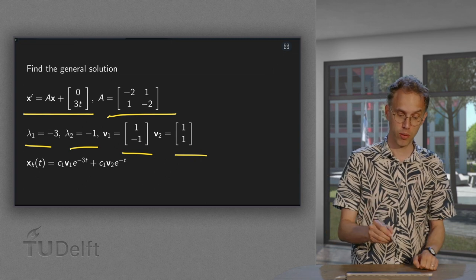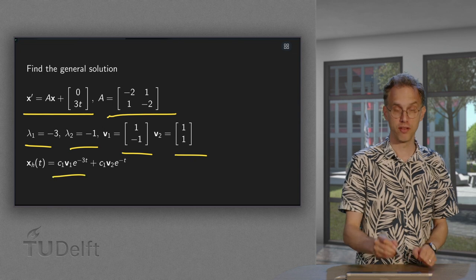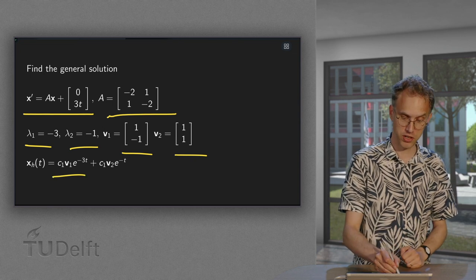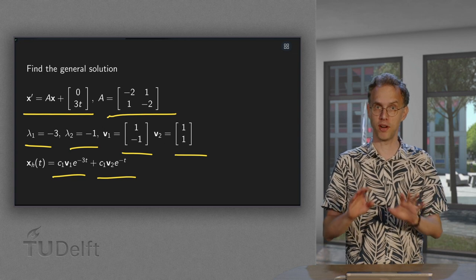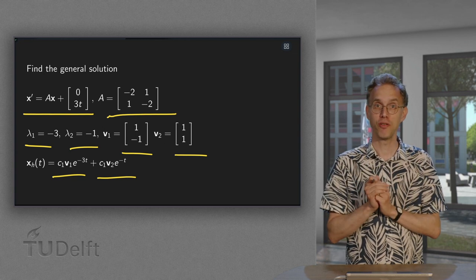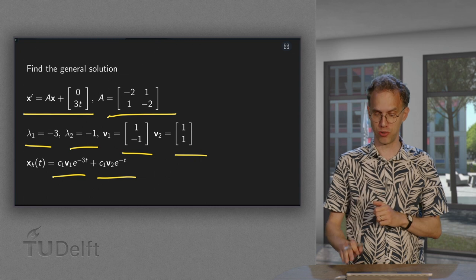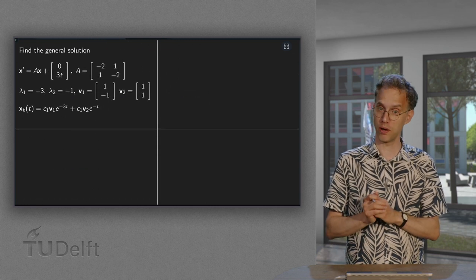So, we have our homogeneous solution c1 v1 e to the power lambda 1t plus c2 v2 e to the power lambda 2t. So that's the homogeneous part. That is fine. How do we find a particular solution? So, how do we deal with the non-homogeneous part?